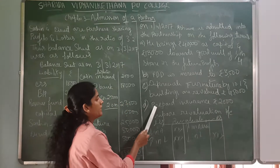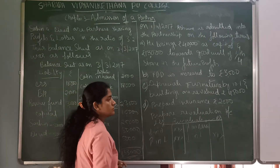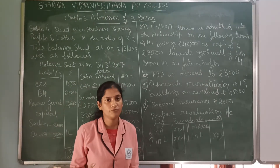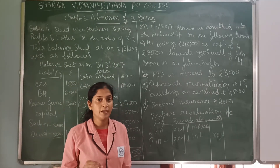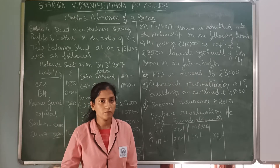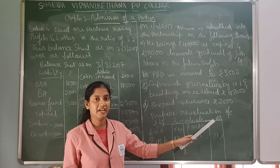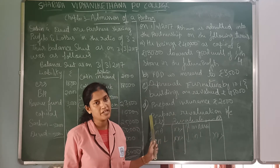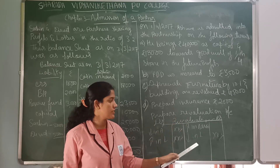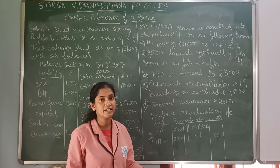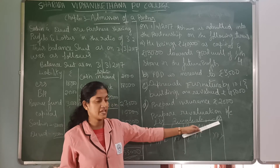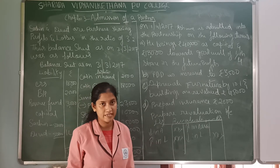Next, we have prepaid insurance of Rs. 2,000. As per the revaluation format, prepaid items are credited and outstanding items are debited. So prepaid insurance of Rs. 2,000 will be written on the credit side of the revaluation account.